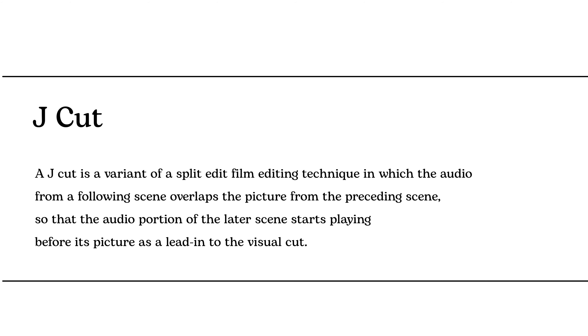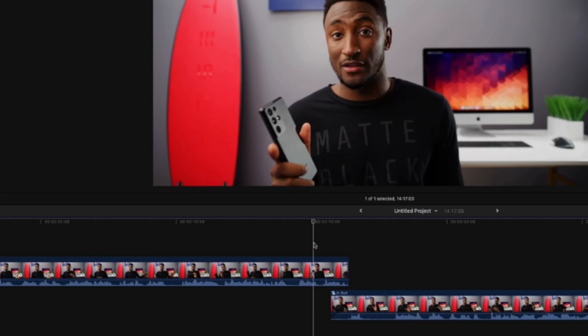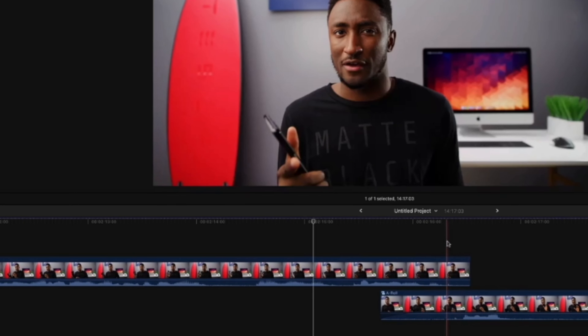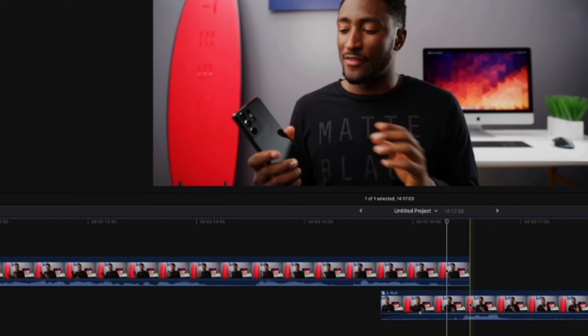J-cuts — this is the biggest one. I didn't even know something like this existed. A J-cut is a variant of a split edit film editing technique in which the audio from the following scene overlaps the picture from the preceding scene, so that the audio portion of the later scene starts playing before its visuals, as a lead into the visual cut. In the Skillshare course, Marcus actually shows how he does J-cuts in his editing process. He doesn't recommend it unless you do it perfectly. As a practice, I tried making J-cuts in my previous video — I don't think I nailed it, but I gave it a try so I can learn how to do it.